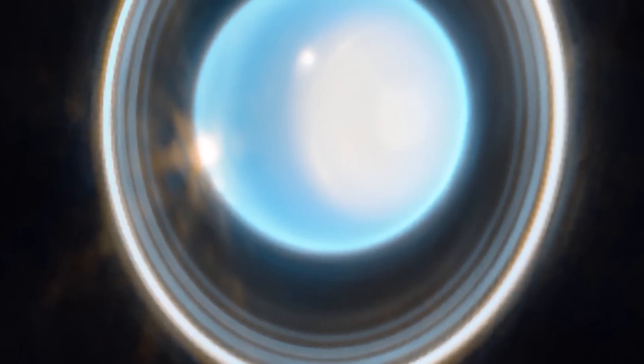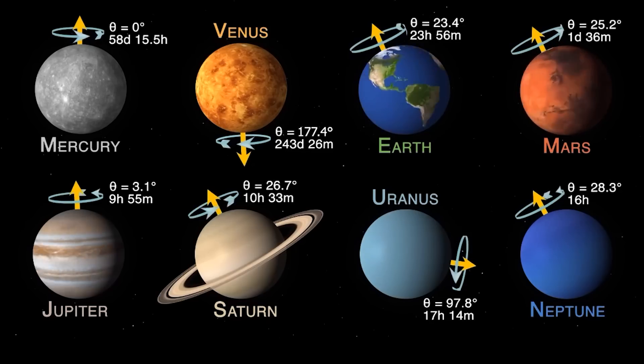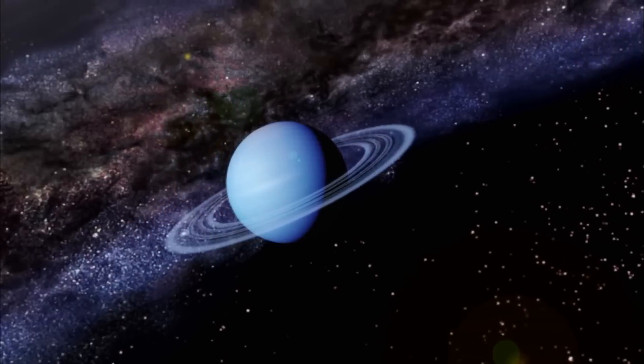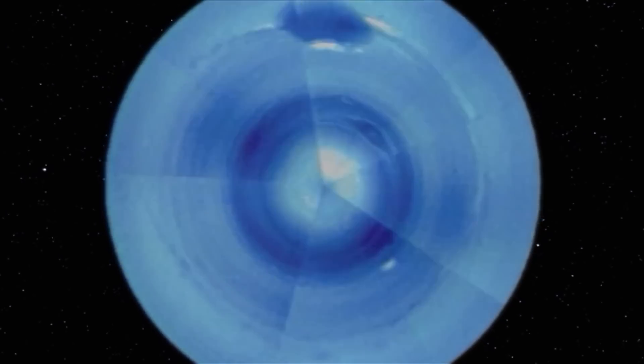This polar cap is unique to Uranus. It seems to appear when the pole enters direct sunlight in the summer and vanish in the fall. These Webb data will help scientists understand the currently mysterious mechanism.